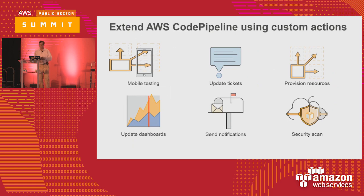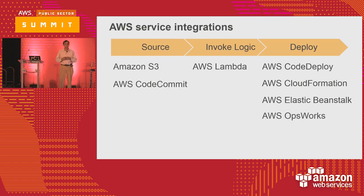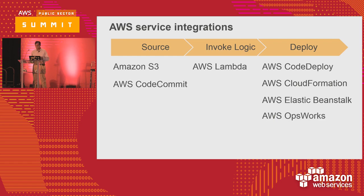Here is a way to extend. Your ticketing system can be attached to your notification that something has been done, completed, or there has been a failure. Or you can have a security scan as the code is orchestrating through the pipeline. Tools you can leverage in your CI/CD pipeline: S3, CodeCommit as part of your source repository. Your Lambda function — code that can run without you having to provision resources for it — is a serverless execution environment. You can hook Lambda to react to some of the stages. On the deploy part, you have CodeDeploy, CloudFormation, Beanstalk, and OpsWorks.